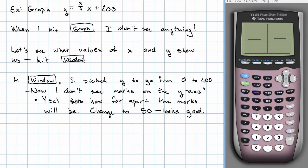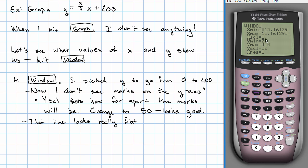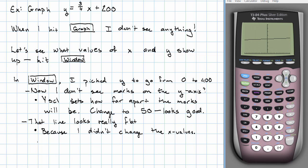Now, another thing that happened is, that line looks really flat. Why did that happen? Oh, I didn't change the x's. Right. Now, this length is 400 long, but this is still only about 30. That's no good. I'm going to choose zoom square again.